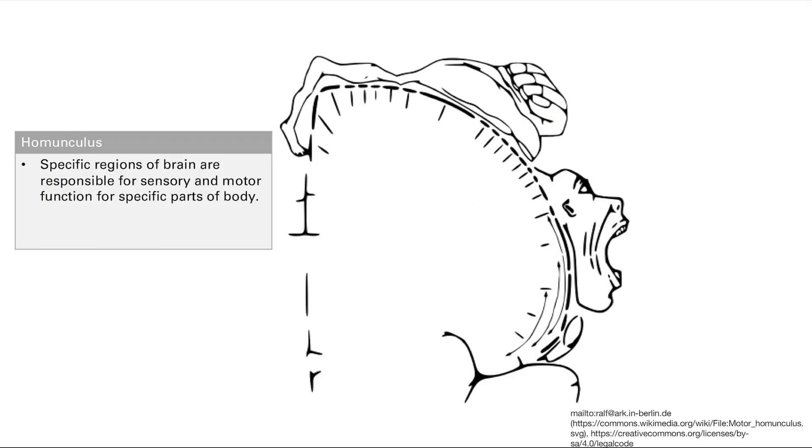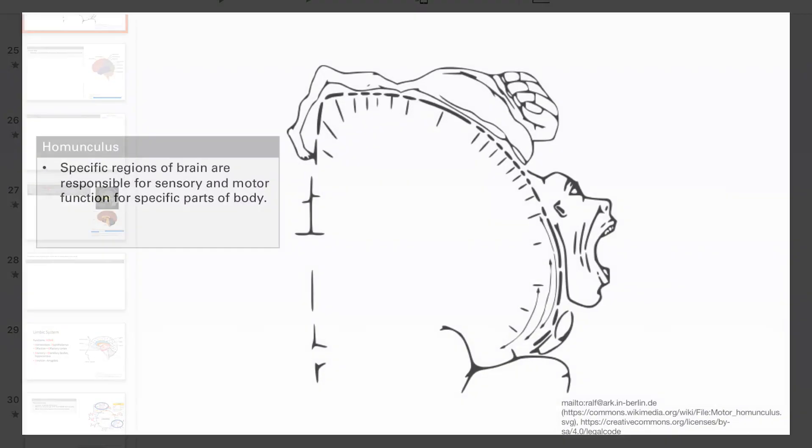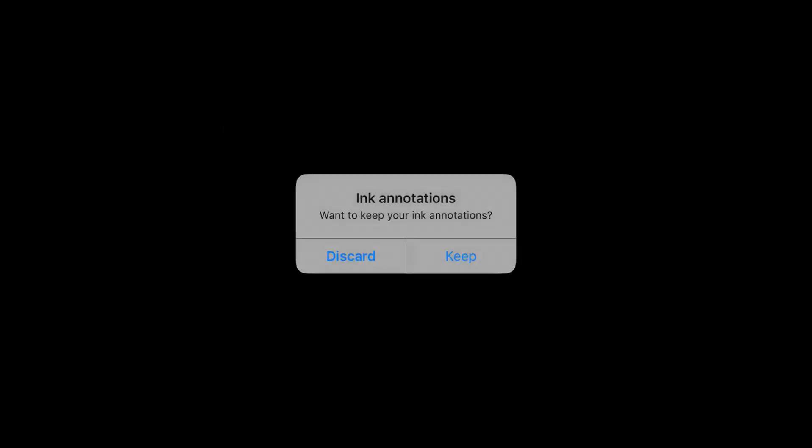These are regions of the cortex responsible—we just talked about the sensory and the motor cortex—and different parts of the brain are responsible for different parts of the body. We've cut the brain in half. Go back. We cut the brain in half so you can see. You can just imagine the other half here that we're not going to talk about.